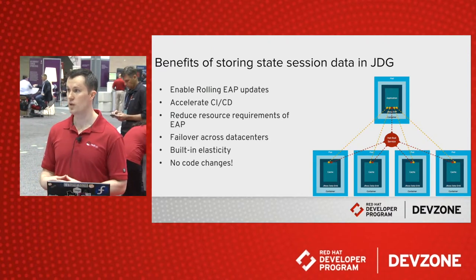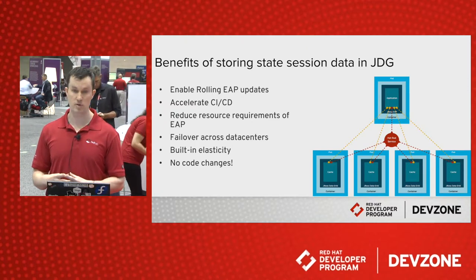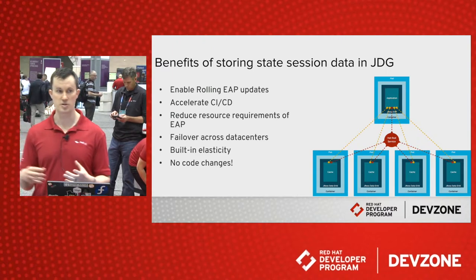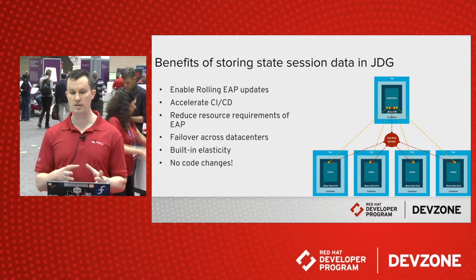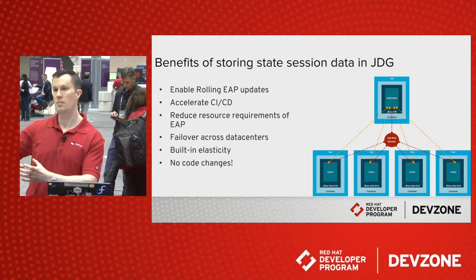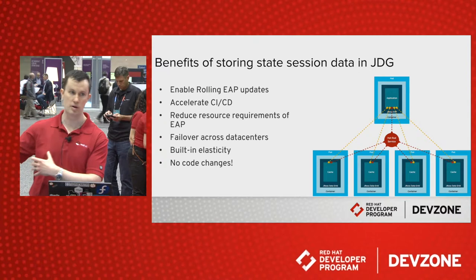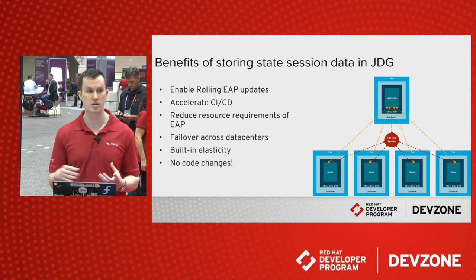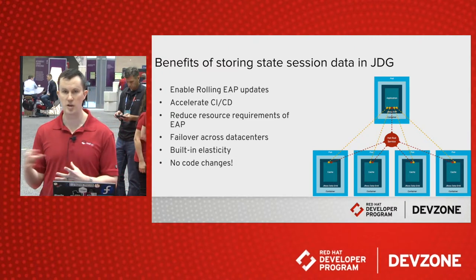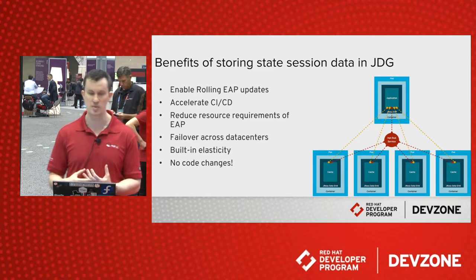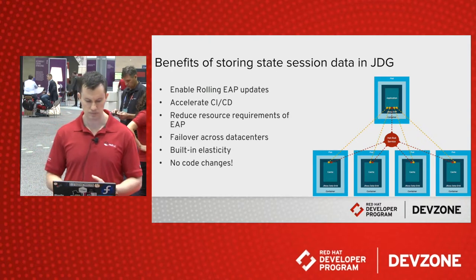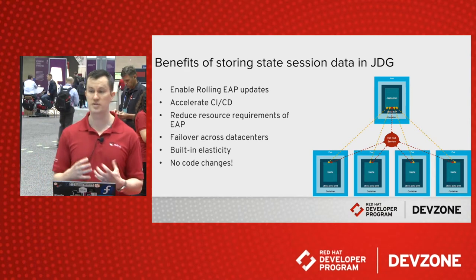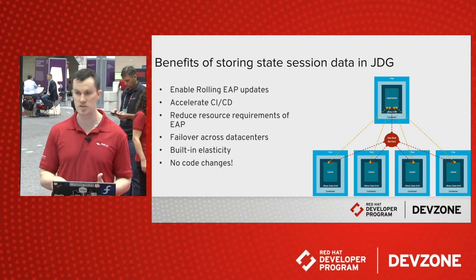One thing that's really nice is you can actually seamlessly failover across data centers. JBoss Data Grid has a built-in feature where, if you have a cluster of sessions or any data, it can automatically failover to another cluster running somewhere else in another public cloud or private data center. A lot of customers currently use technologies like database replication or SAN replication for this, which are very expensive. This comes out of the box and has been proven by many customers. You also have built-in elasticity, and the thing I like the most is no code changes — I don't have to code my application for this. I just press a button and it rolls out.